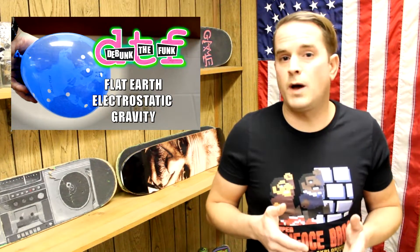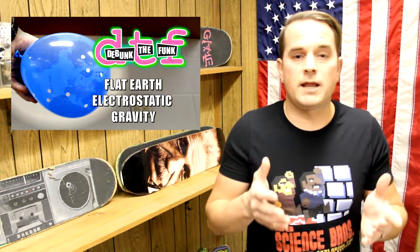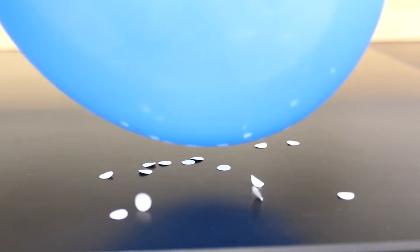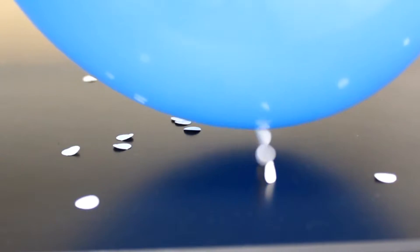In Debunk the Funk number 12, using what we can already know about electric charges from first-hand experience, I showed how a charge explanation for gravity cannot be true, equipped with just a balloon and some pieces of paper. Well, now it's time to look at an area of flat earth's denial of gravity that they do all seem to agree upon.